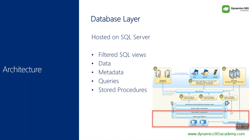To summarize, in this chapter we discussed the architecture of Dynamics 365 customer engagement application. It has three layers: the presentation layer, the business logic layer, and the database layer. As a developer, you need to understand these three layers, and knowing the architecture is very important when performing code-based customization such as plugins and custom workflow activities. That's it for this chapter — see you in the next one.